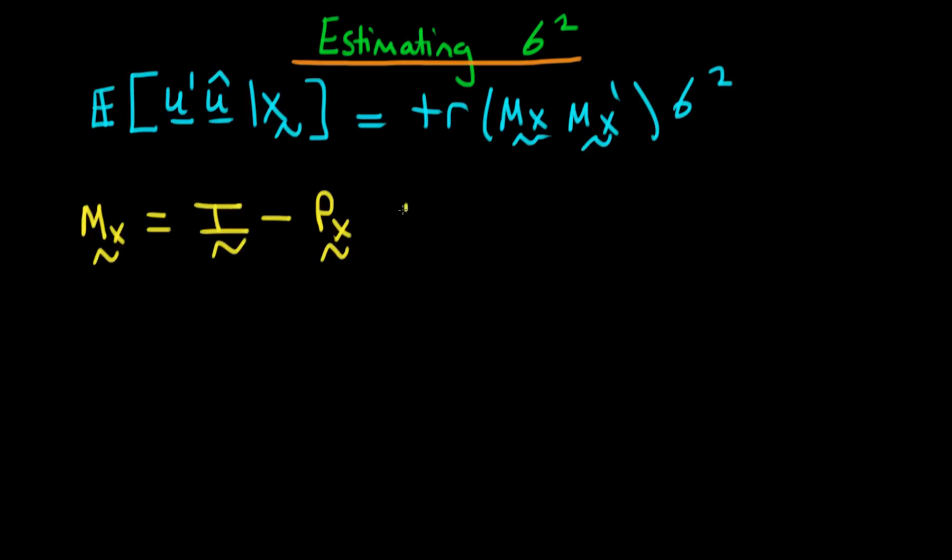So what in this circumstance is mx primed or the transpose of mx? Well it's going to be equal to the transpose of the identity matrix which is just the identity matrix minus the transpose of px.